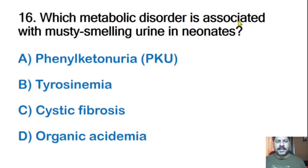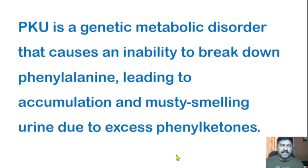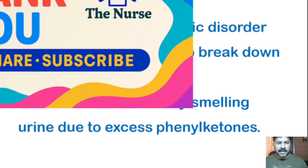Sixteenth question: Which metabolic disorder is associated with musty smelling urine in neonates? Options: phenylketonuria, tyrosinemia, cystic fibrosis, or organic acidemia. The correct answer is phenylketonuria (PKU). PKU is a genetic metabolic disorder that causes an inability to break down phenylalanine, leading to its accumulation and musty smelling urine due to excess phenylketones. That covers today's 16 questions related to neonatal intensive care nursing.